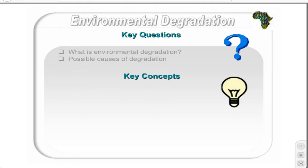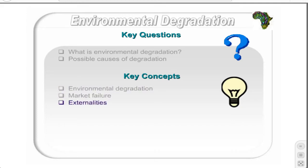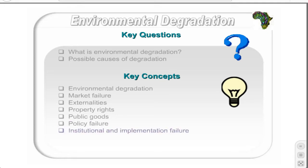The key concepts discussed are: Environmental degradation, Market failure, Externalities, Property rights, Public goods, Policy failure, and Institutional implementation failure. Remember to add this to your glossary.